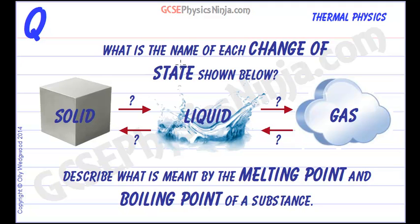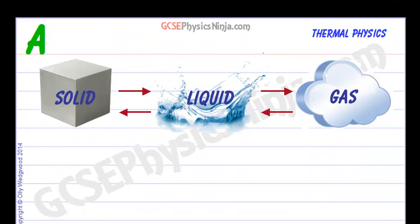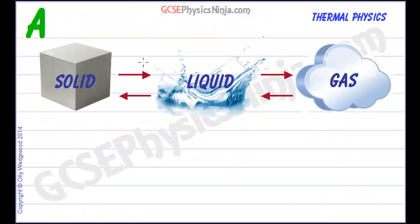So what are the names of the changes of state as we go from a solid to a liquid to a gas and back again? And we need to define what is meant by the melting point and boiling point of a substance. Let's first of all start by naming these changes of state.